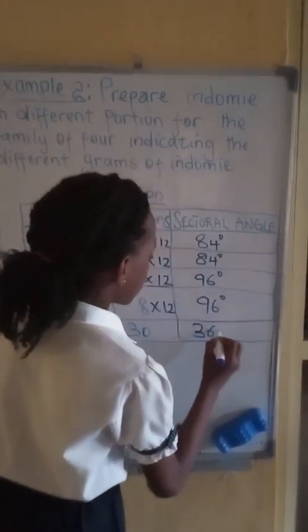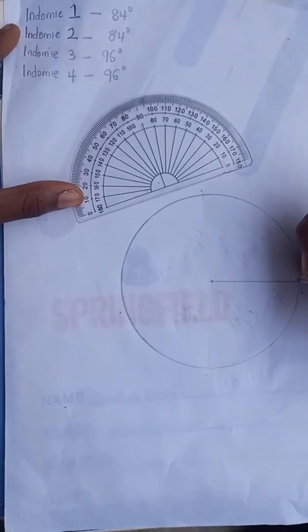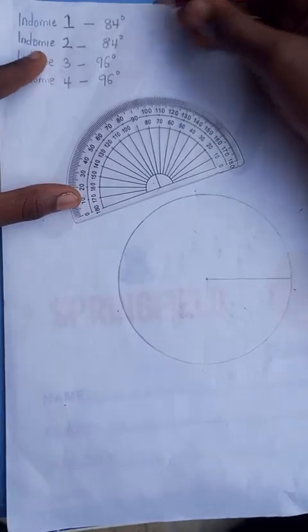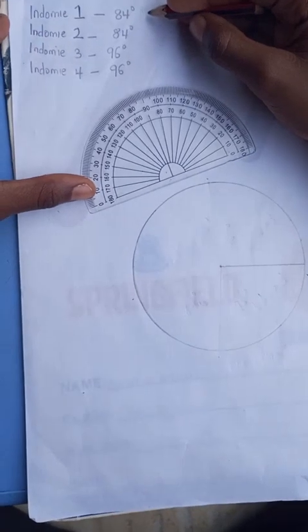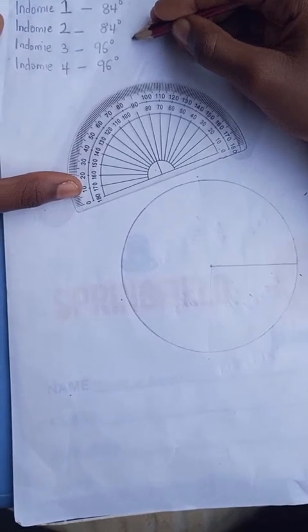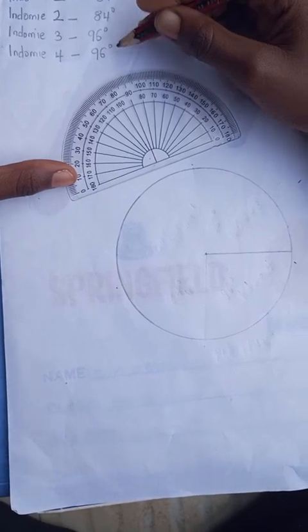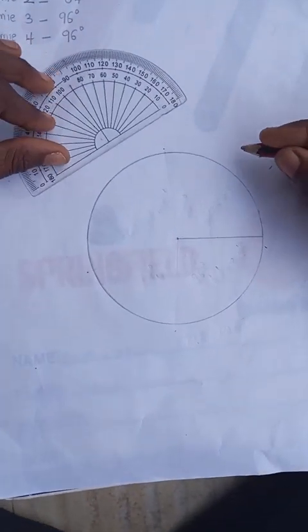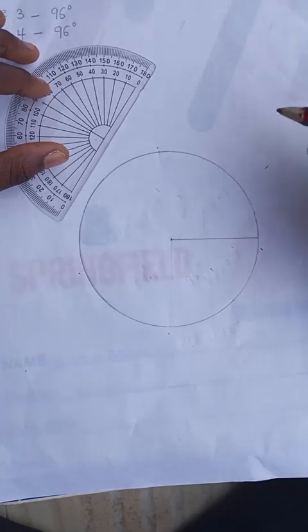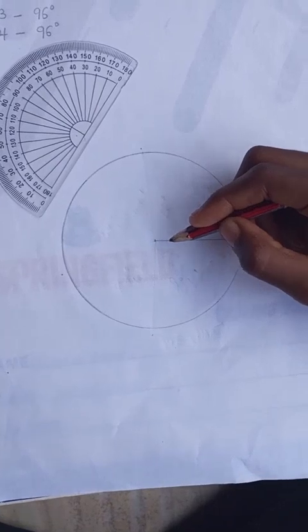If you add all of this sectoral angle, we need to give you 360. Here we have the sectoral presentation of Indomie that was prepared for the family of four. Indomie 1 is 84 degrees, Indomie 2 is 84 degrees, Indomie 3 is 96 degrees, and Indomie 4 is 96 degrees. Here is the circle which is 360 degrees, and then draw a radius line from this point at the center of that circle.